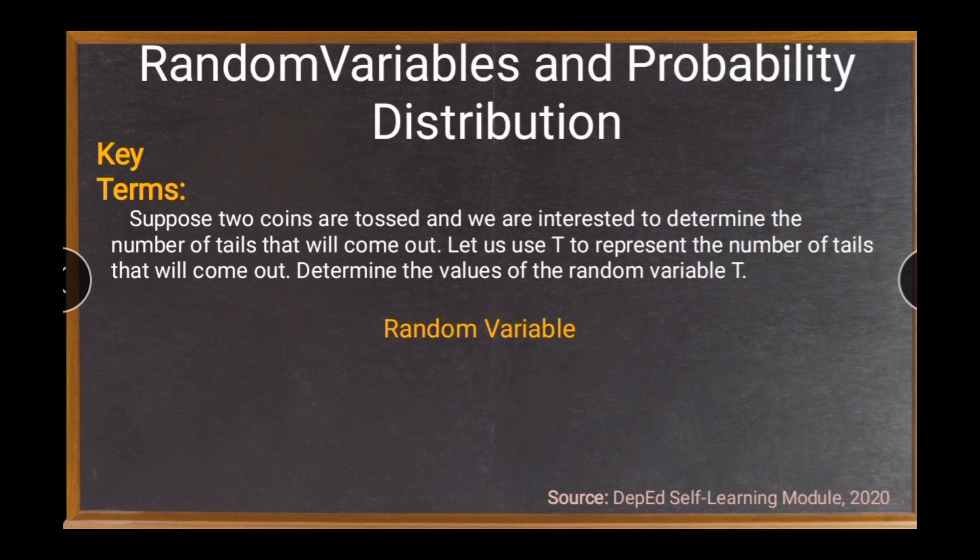It is a set of possible values from a random experiment. So given this situation, since random variable is represented by capital letters, we have capital letter T here to represent the number of tails that will come out from tossing two coins. Another random variable can be discrete random variable, and that is countable. So this situation is an example of a discrete random variable. To compare, we also have continuous random variable, and this random variable can be measured.